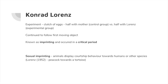Lorenz also noted what he called sexual imprinting — where animals display sexual behaviour towards what they imprinted on. If they've imprinted on a human, they'll show sexual behaviour towards a human. Lorenz noted this with a peacock that saw a tortoise when it was born and subsequently wanted to mate with the tortoise. This suggests sexual imprinting has an effect later in life, and we'll look later at the effect of early attachments on later relationships.